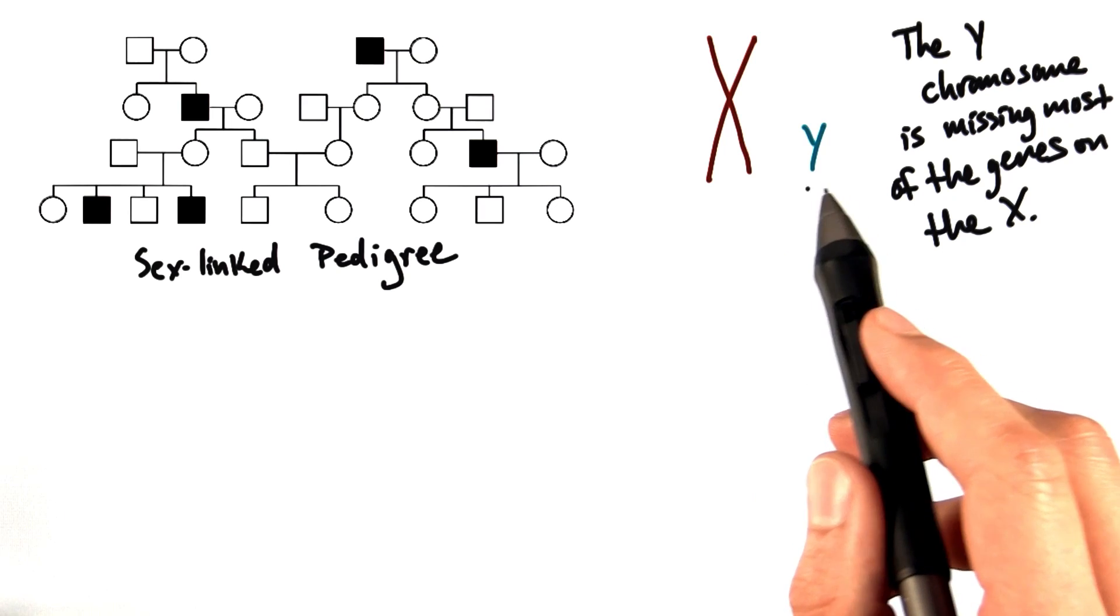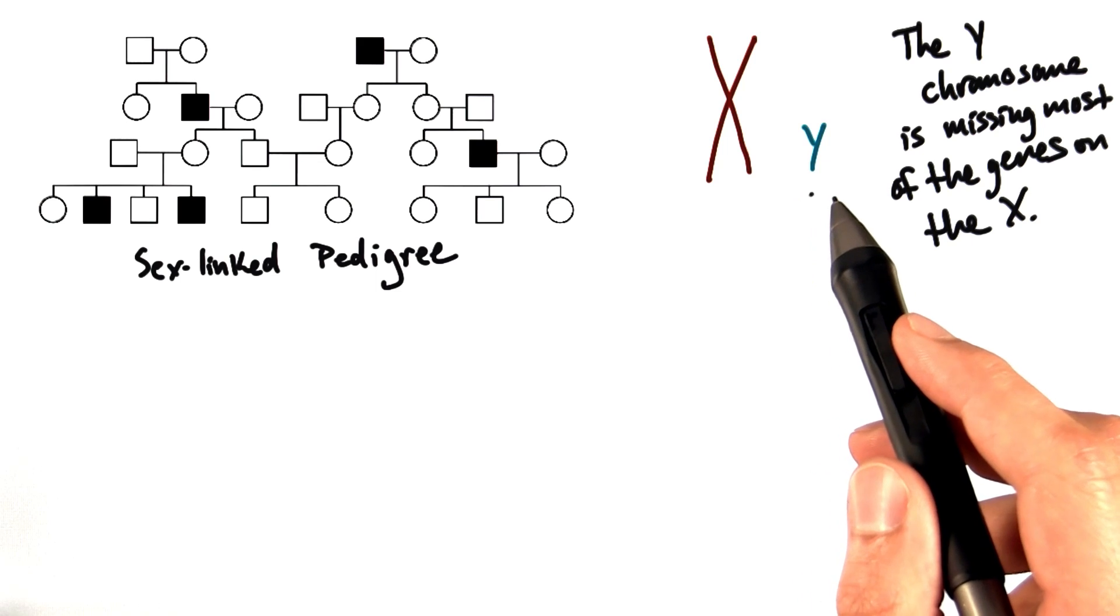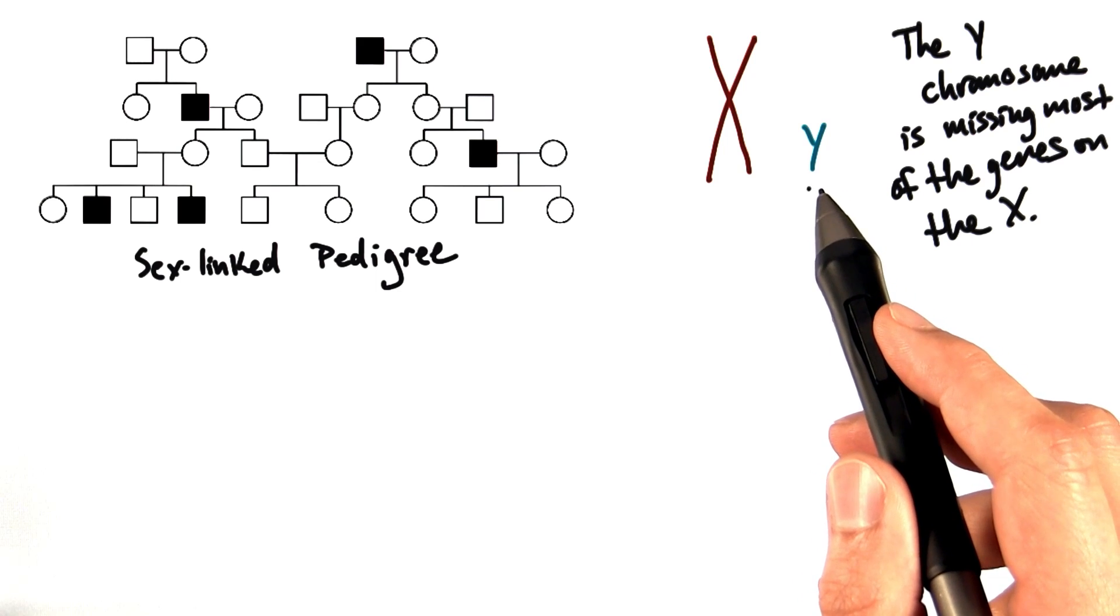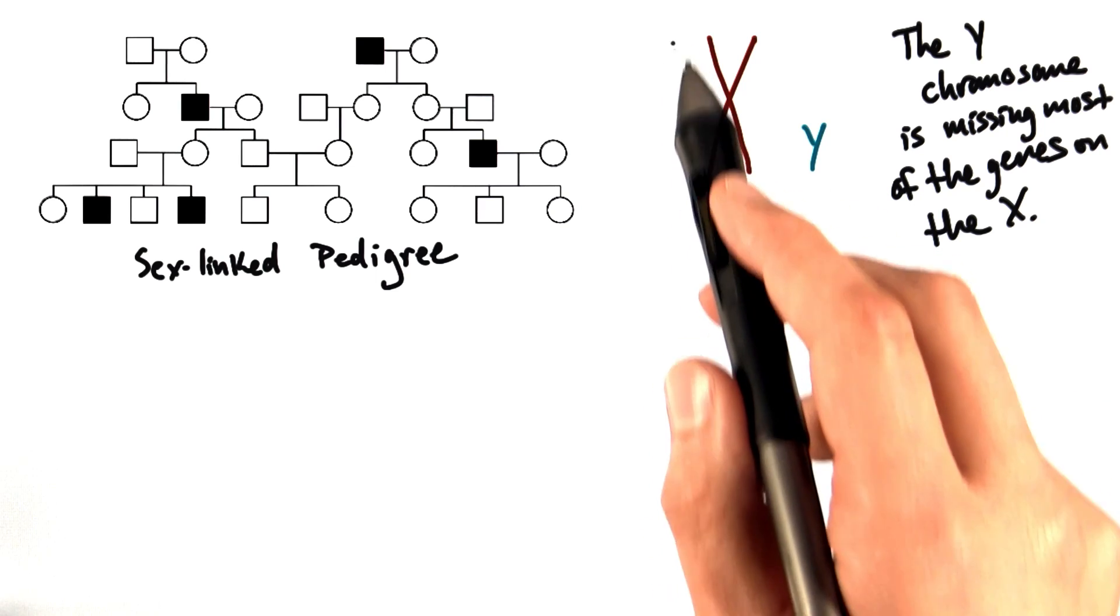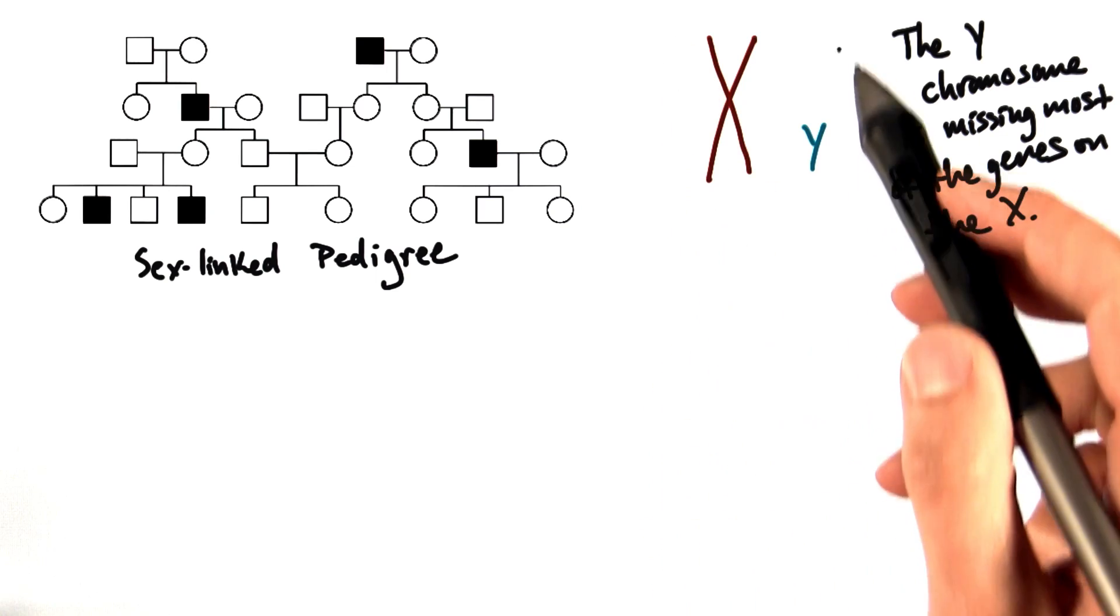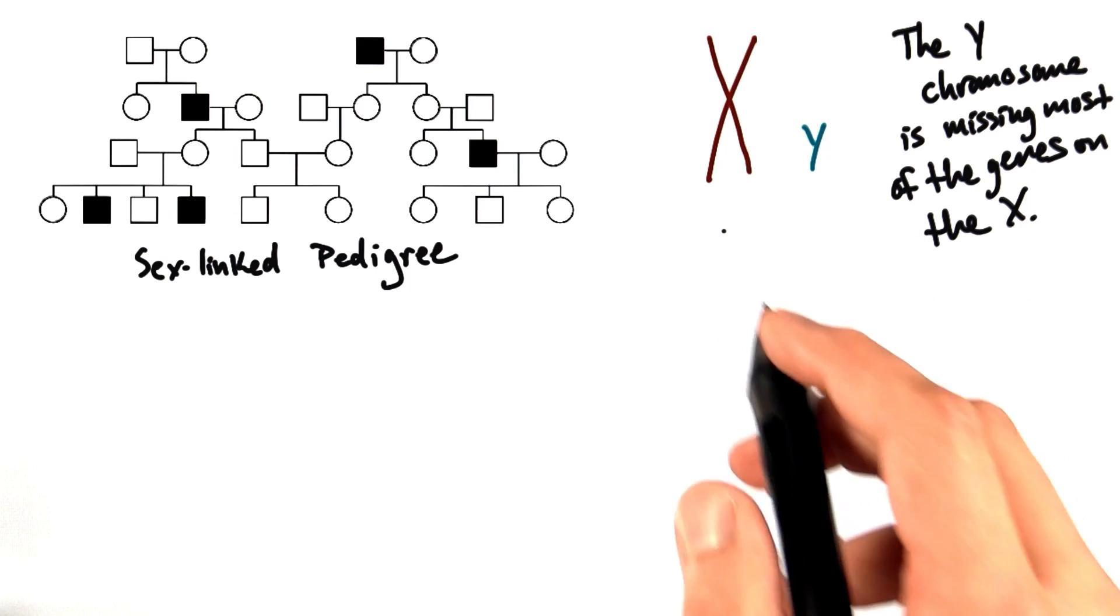The Y chromosome has been getting smaller and smaller for the last, I don't know, 100 million years or so. But the result has had dramatic implications for genes that are expressed from the X chromosome and that don't exist on the Y chromosome. Think about it for a second.